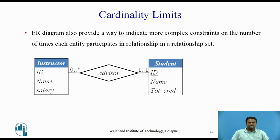For example, the line between advisor and student has a cardinality constraint of 1..1, meaning each student must have exactly one advisor. The limit 0..* on the line between advisor and instructor indicates that an instructor can have 0 or more students. Thus, the relationship advisor is one-to-many from instructor to student, and the participation of student in advisor is total, implying that a student must have an advisor. Note that it is easy to misinterpret the 0..* on the left edge and think the relationship is many-to-one from instructor to student — this is exactly the reverse of the correct interpretation.